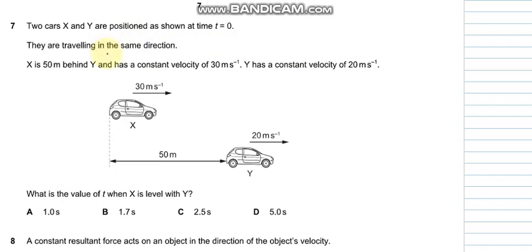Question number seven says two cars X and Y are positioned - car X moves at 30 meters per second, car Y moves at 20 meters per second, and they are both 50 meters apart. What is the value of T when X is level with Y?